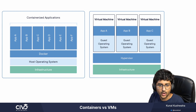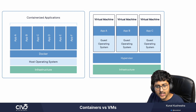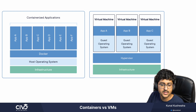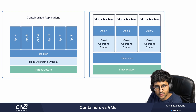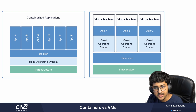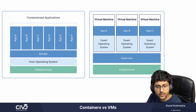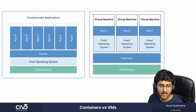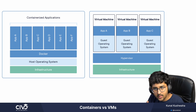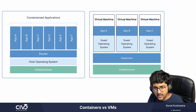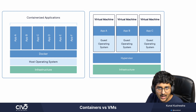Multiple containers can run on the same machine. The important part is that they share the host operating system — the OS kernel is shared by all the containers above. It's not like installing a new operating system; it's using the host OS. Each app — app A, app B, app C, app D — runs in an isolated environment as isolated processes. They don't really have much information about what is going on in the host operating system outside.